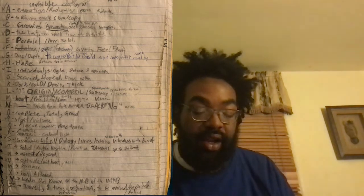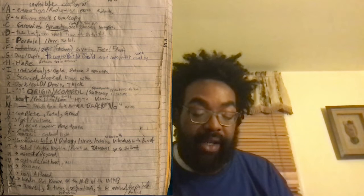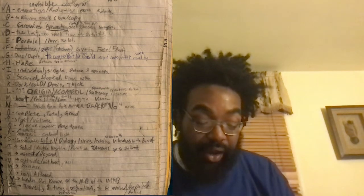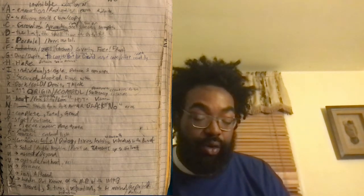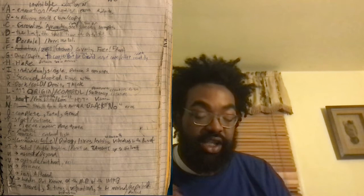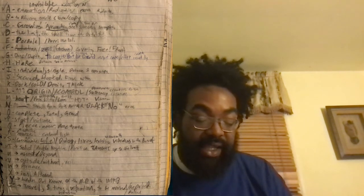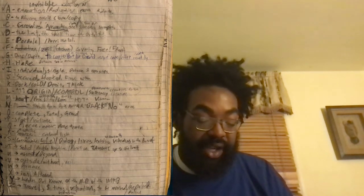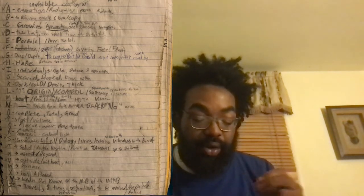J: secured, hooked, fixed within. K: dark, cold, dense, thick. L: origin or control, dominance, supremacy, the creative force, the active creation. M: heat, warmth, possibility, energy, love, potential, vibration, and the thought realm. N: dark matter, black, blank space. O: complete, total, or grand. P: to start or initiate. Q: pierce, enter, penetrate. R: a specific source, condensed light. S: to germinate, life, biology, living, existing, existence. T: solid, or double negative-positive pull, taut as in up to the limit.